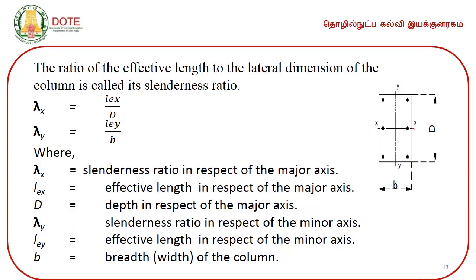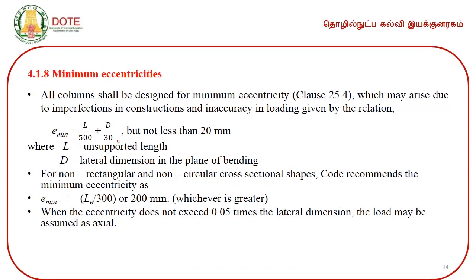The slenderness ratio is the ratio between the effective length and the lateral dimension. Slenderness ratio about the x-x axis, denoted λx, is equal to the effective length in the x-direction divided by the perpendicular dimension d. Similarly, slenderness ratio about the y-y axis is LEy divided by b. Minimum eccentricity must be checked for the application of compressive loads. The minimum eccentricity is given by: e_min = L/500 + d/30, but restricted to a minimum of 20 mm, where L is the unsupported length and d is the lateral dimension in the plane of bending.